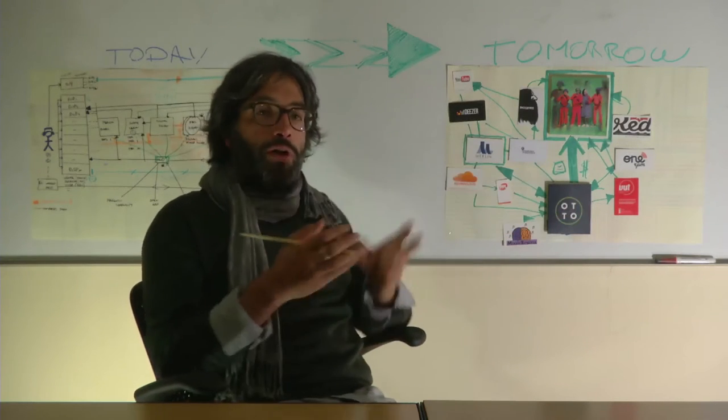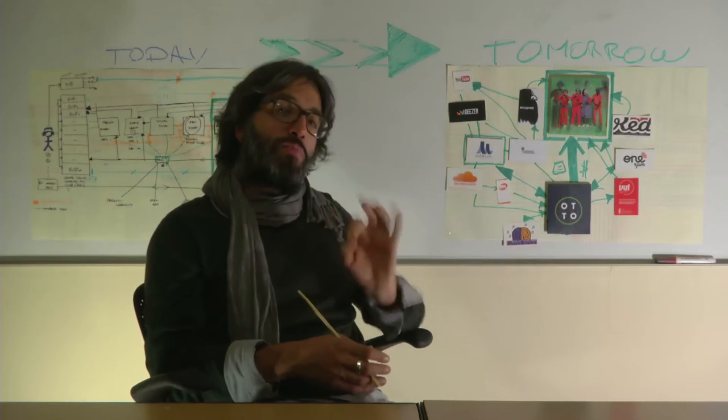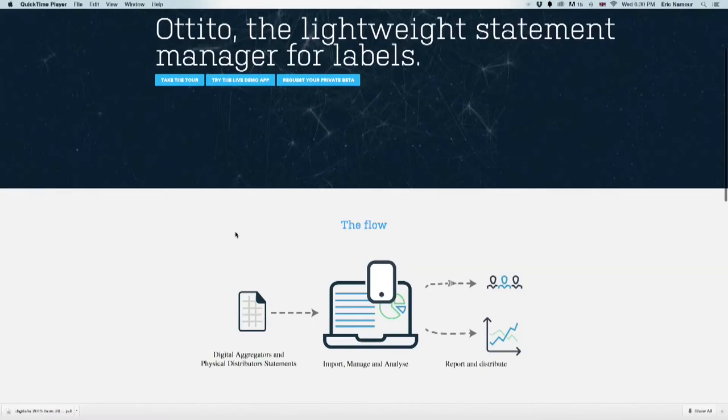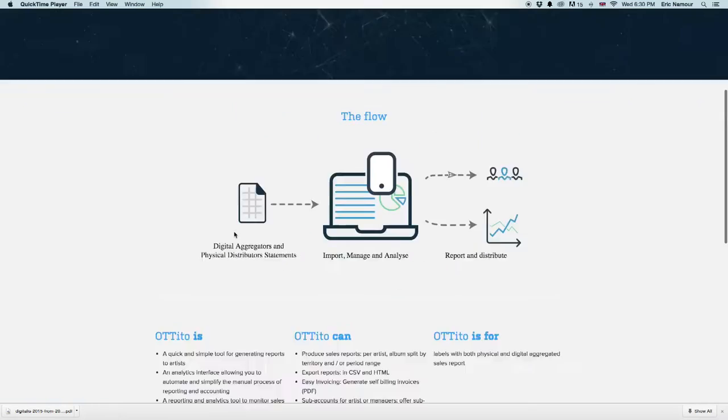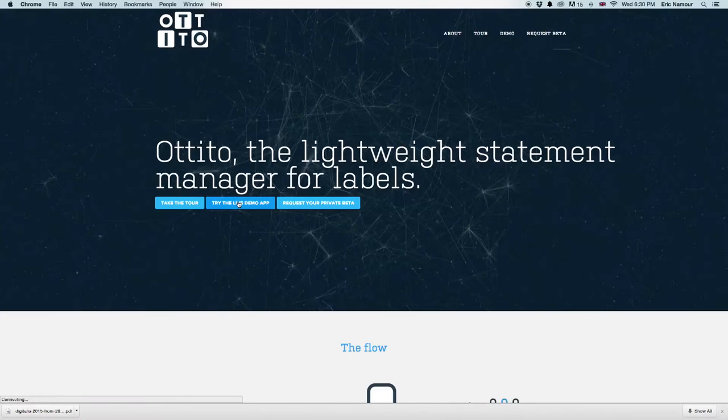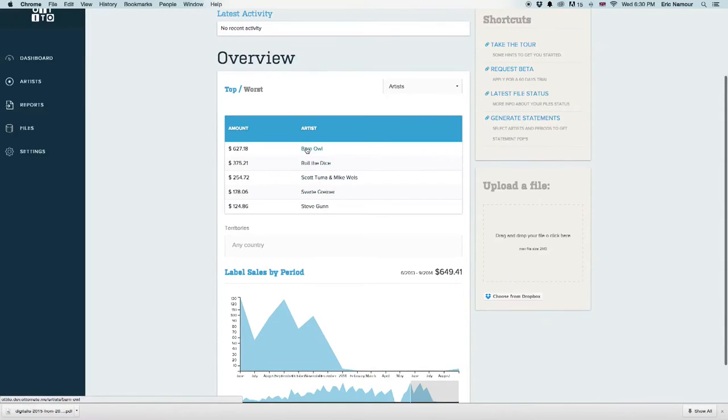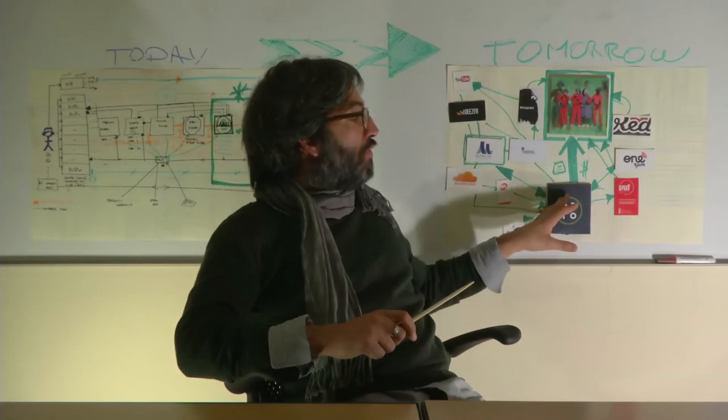I would like to open up our platform in two ways. The first one would be to provide our small tool for small labels called Otito, whereby any small label can just include and ingest one of the reports coming from the physical or digital distributor in order to analyze the data and easily pass it on to the artist and pay them.